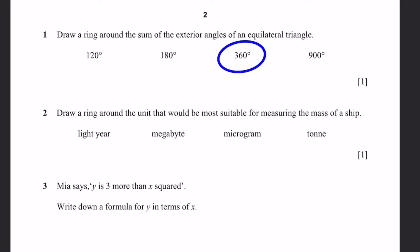Question 2. Draw a ring around the unit that would be most suitable for measuring the mass of a ship. Light year is wrong since this is a measurement of length, not mass. And megabyte is a measurement of storage space on a computer, not mass. Now microgram, yes this is a mass unit, but it's very small. The mass of a ship is much higher than even a gram, and talking about micrograms will have too many zeros. Therefore, the answer is a tonne. It is equivalent to a million kilograms, and this is about the mass of ships.